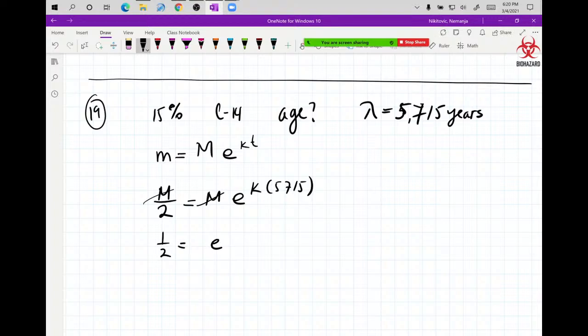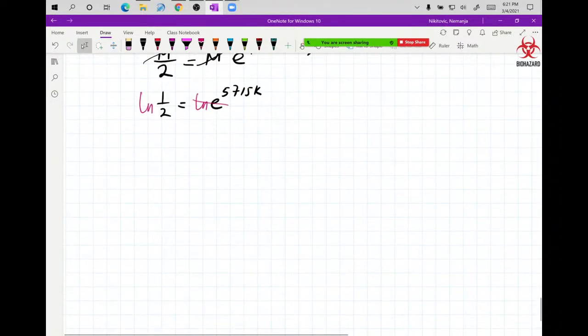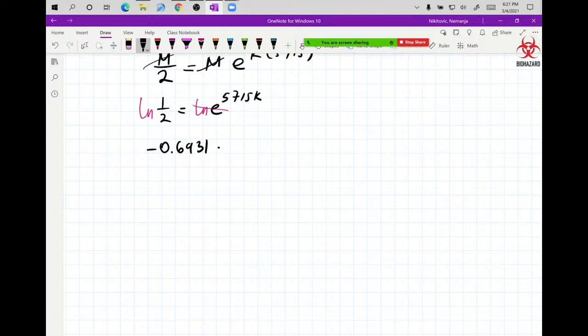You have your one-half equals E to the 5715K. And then you put LN on both sides. So now LN of half, we had that before, it was negative 0.6931 is equal to 5715K. So now we divide these two numbers and we are going to have our K. So that gives me the K to be negative 0.0001213.